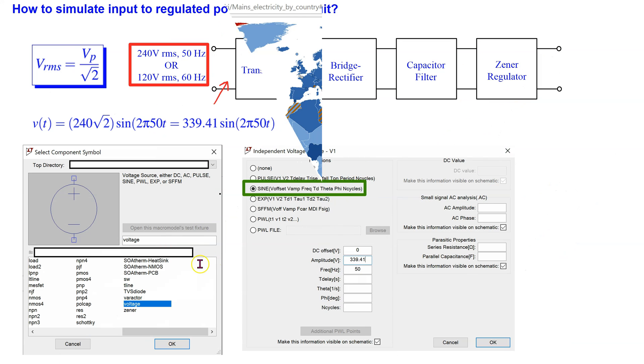We use the component voltage to simulate the input to the regulated power supply circuit. For this component, we use the sine function and enter the DC offset, amplitude and frequency. The DC offset is set to 0. The frequency is set to 50 Hz.